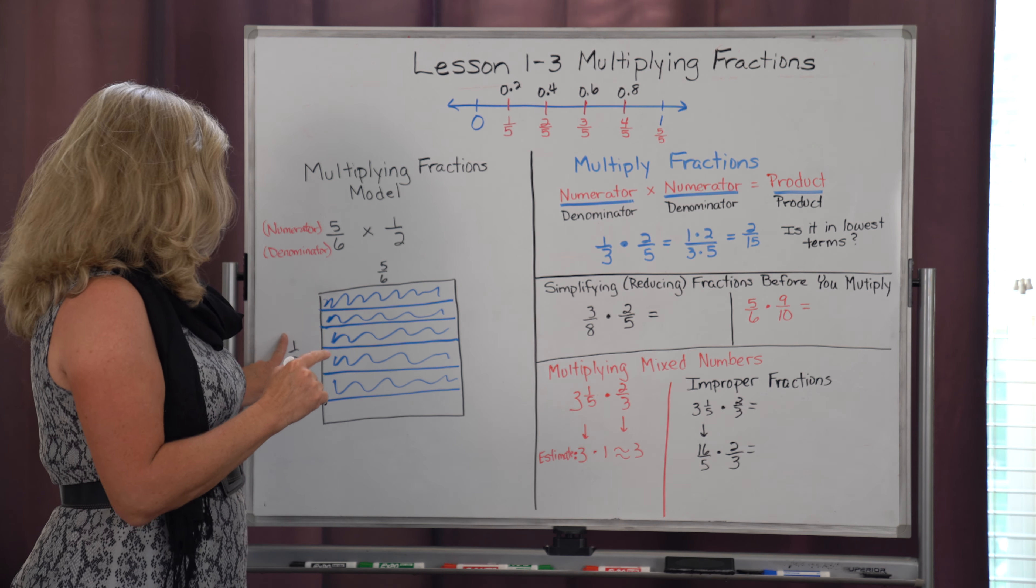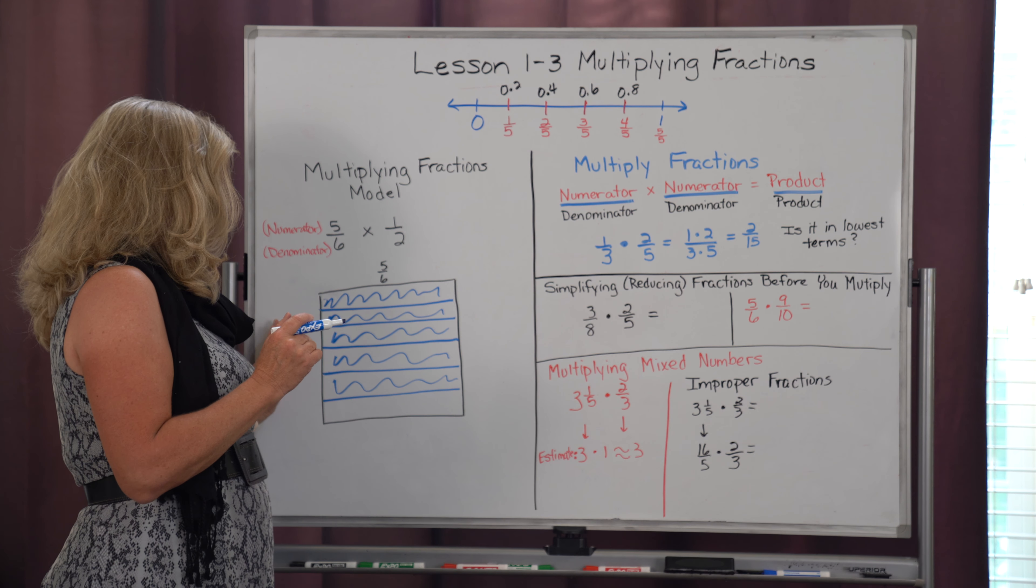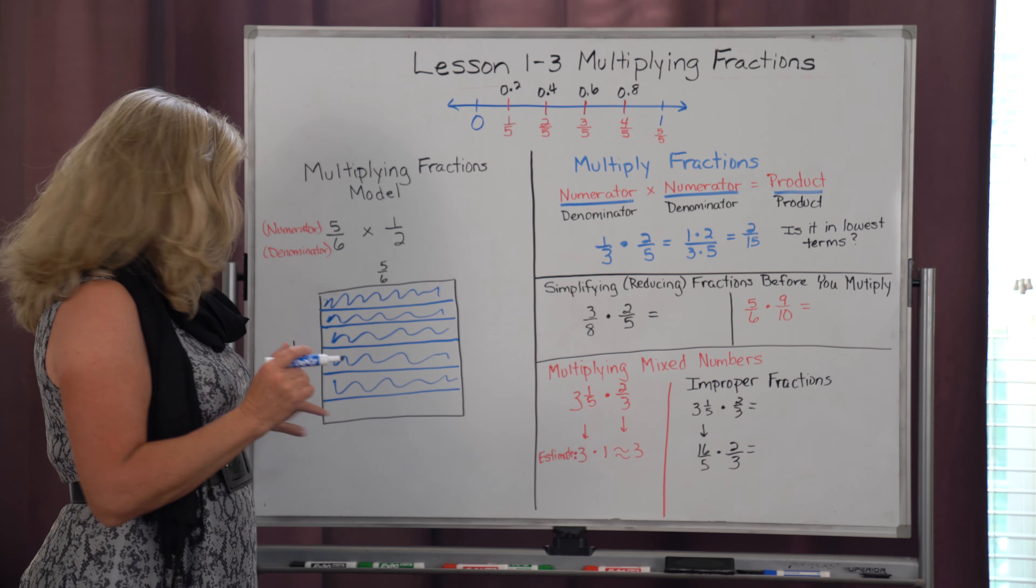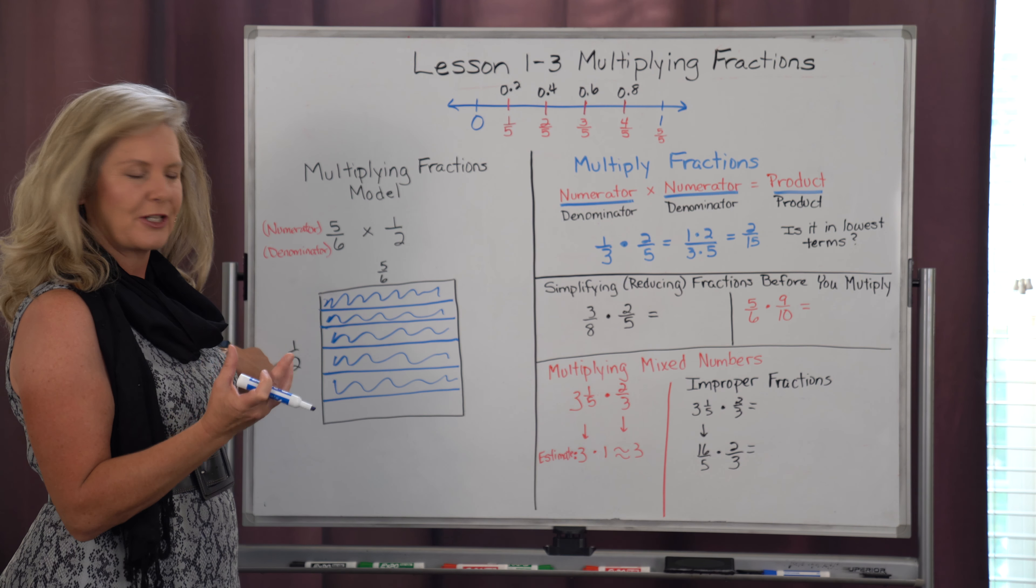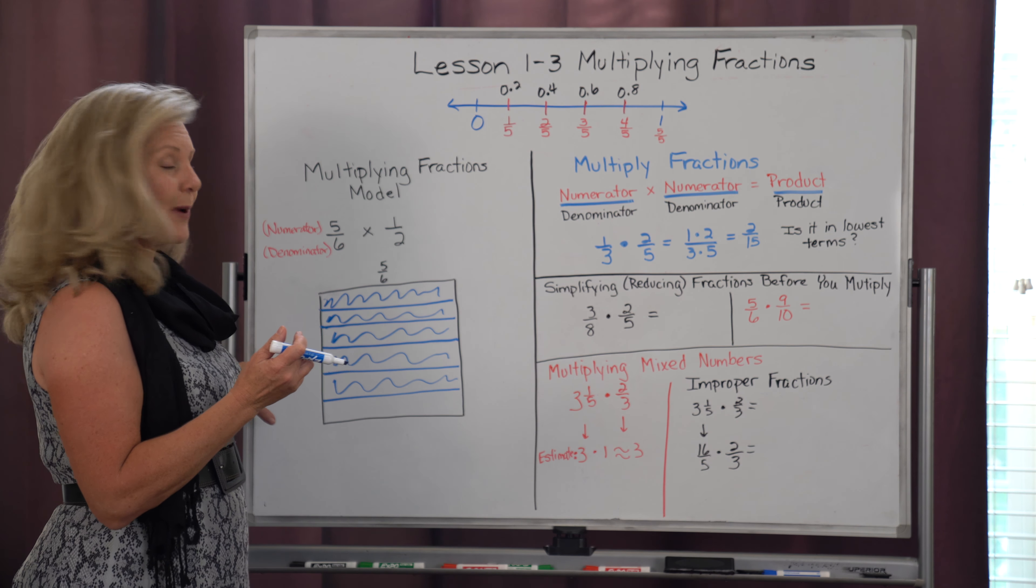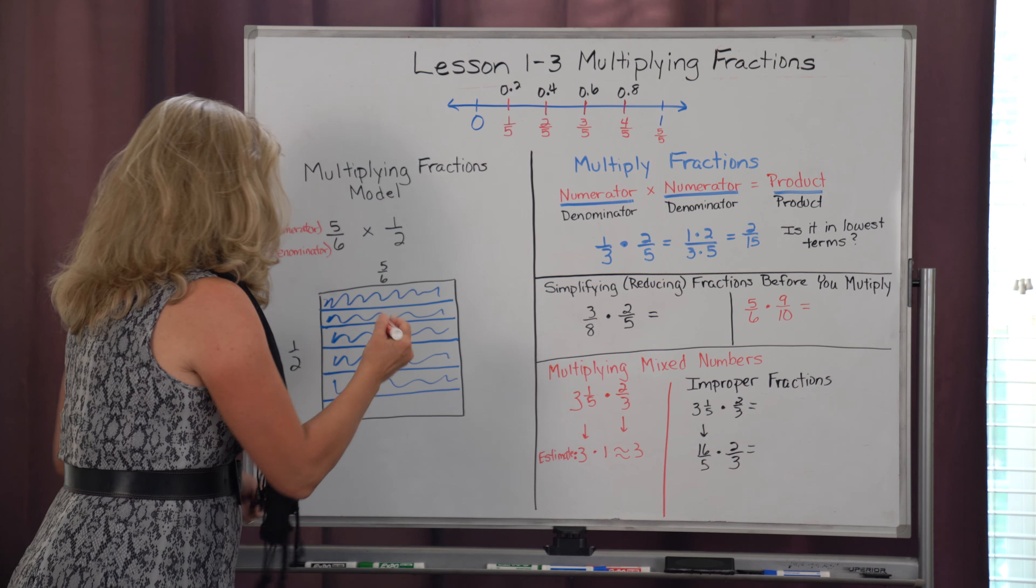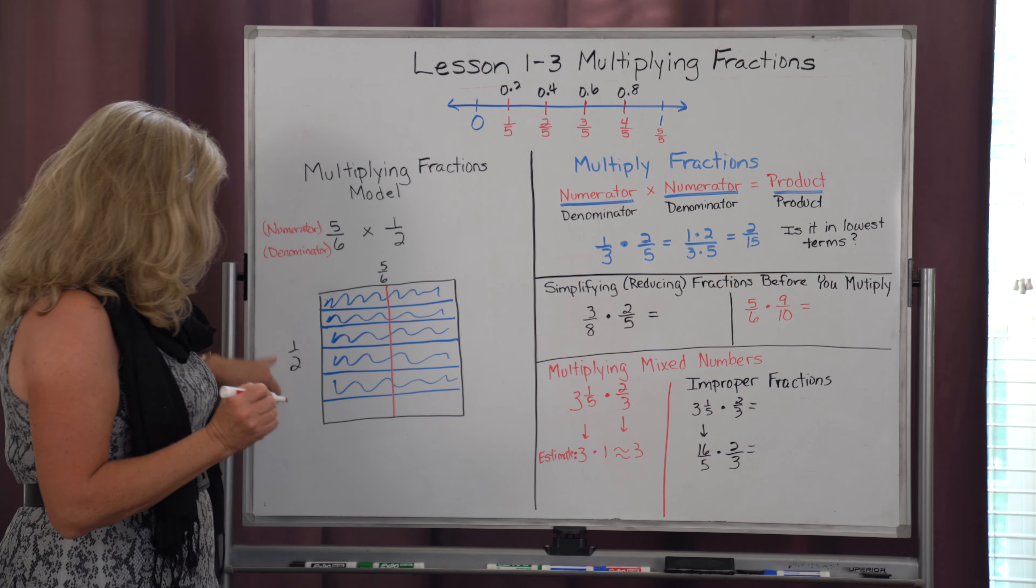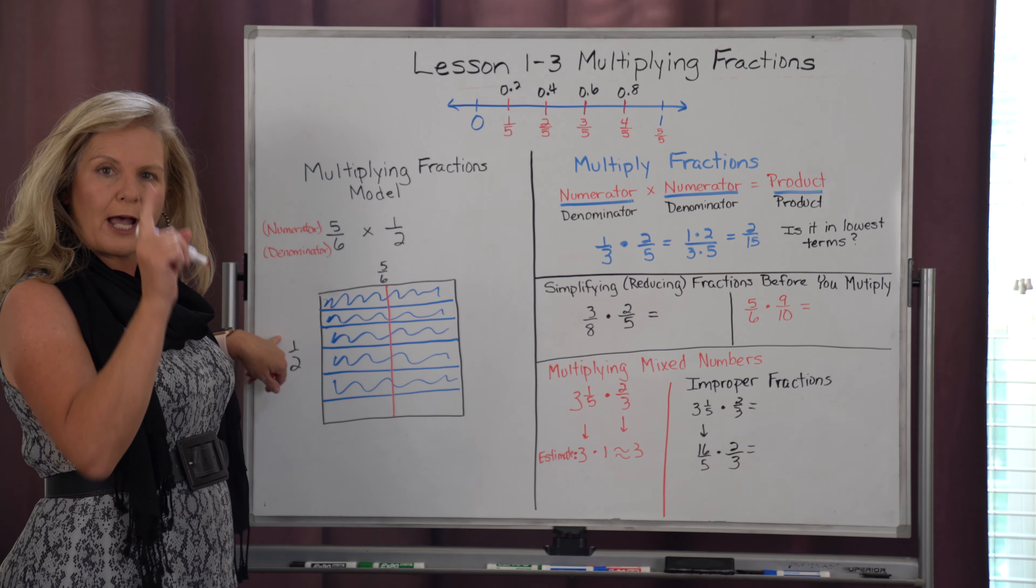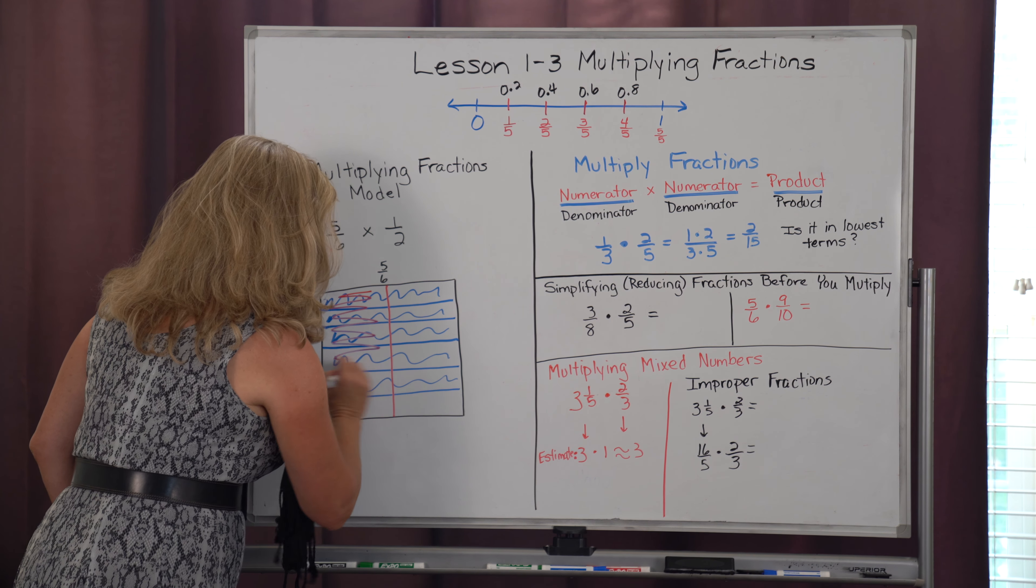So now I have to show 1 half. And for this second fraction, I'm going to work from left to right. So again, the bottom number, the denominator, tells me how many sections I need to divide it into. So I need to divide it from left to right into 2 sections. So I'm going to take a different color and I'm going to divide that into 2 sections. And I want to color in 1 out of those 2 sections. So now I'm going to color in like this.